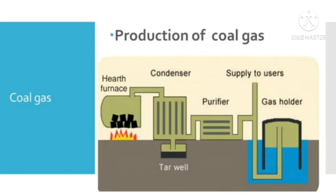Coal gas is a mixture of gases like hydrogen, methane and carbon monoxide obtained by the destructive distillation of coal. Heating coal in the absence of air is called destructive distillation. It is used in heating open-hearth furnaces in the manufacture of steel. It is also used as a reducing agent in certain metallurgical operations.